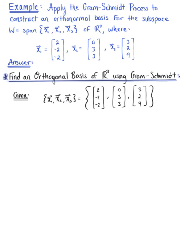I'm going to let vector v₁ be equal to vector x₁, which is the vector with components 2, -2, -2.